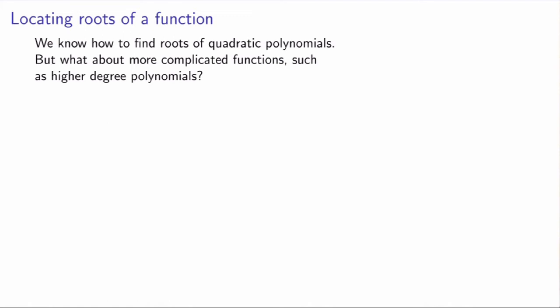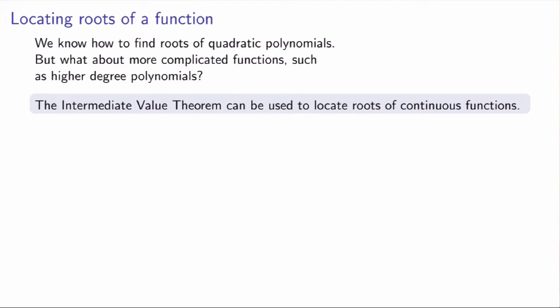Our first application will be to find the roots of a function. If you're given a quadratic polynomial you can use the quadratic formula, but if you're given a more complicated function — say a polynomial of degree higher than 4 — there is no such formula. It turns out that one way to find roots is to use the Intermediate Value Theorem. The idea is to pick two values x equals a and x equals b such that f of a is negative and f of b is positive; the theorem then implies there is a root between a and b.